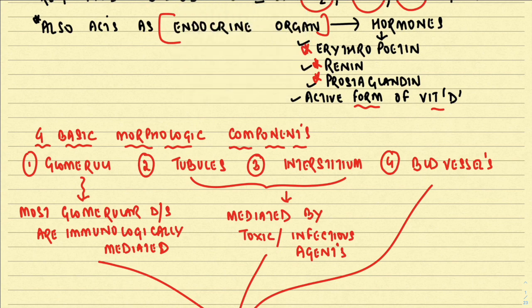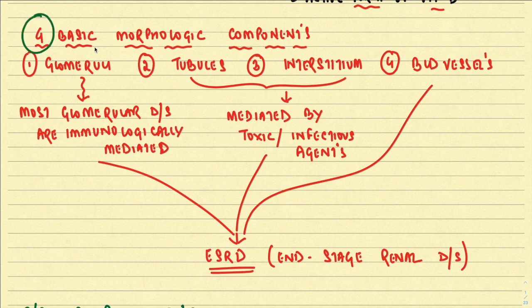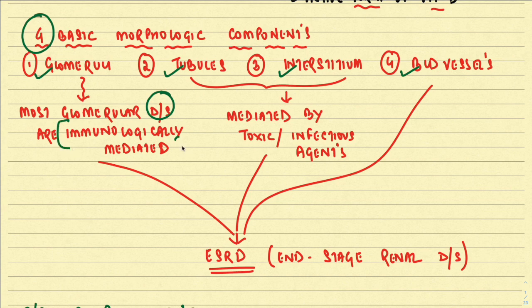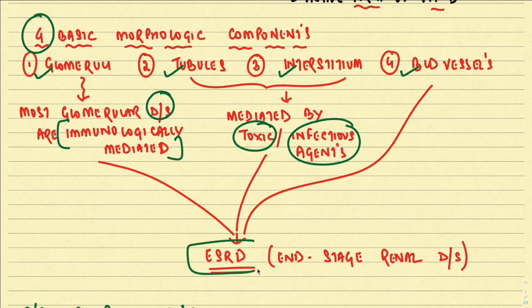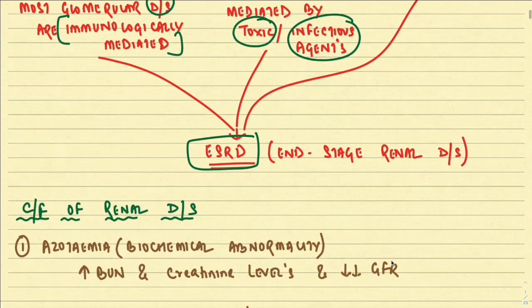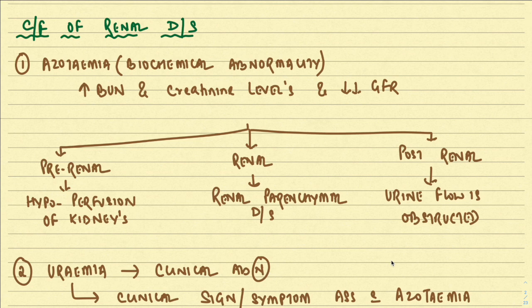When we study the kidney, there are four basic morphological components: the glomerulus, tubules, interstitium, and blood vessels. Most glomerular diseases are immunologically mediated, for example by antigen-antibody complex formation. Tubules and interstitium are mostly destroyed by toxic or infectious agents. Whatever the nature of injury — whether involving the glomerulus, tubules, interstitium, or blood vessels — the end result is end-stage renal disease (ESRD).